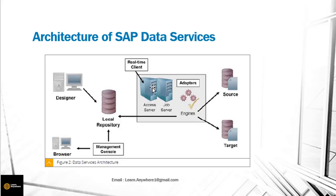Access server is basically a kind of broker which works for real-time clients. Real-time jobs use the access server to send and receive messages. Job server is a very important part of BODS architecture. Each repository is associated with at least one job server. The job server does all the hard work once you run a job — it extracts all the metadata and puts the engine in motion to extract data from source and load it into the target.